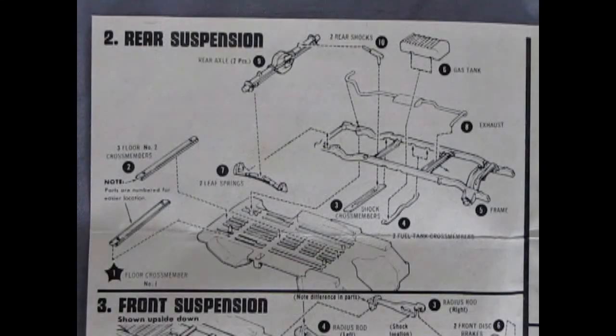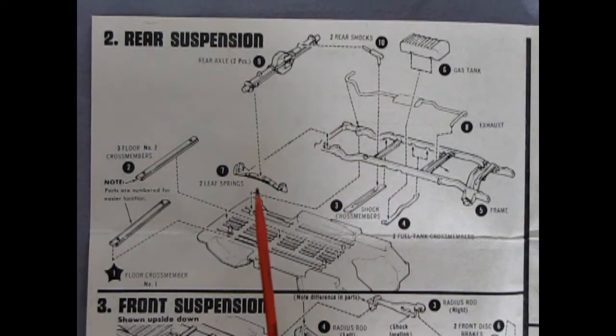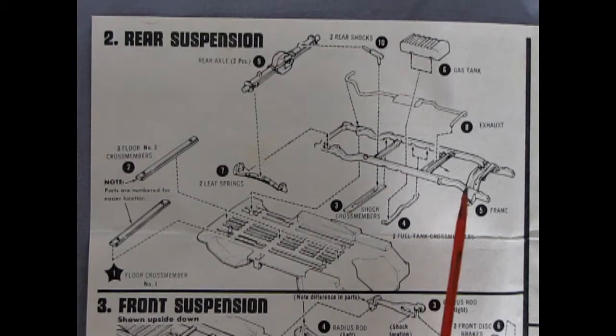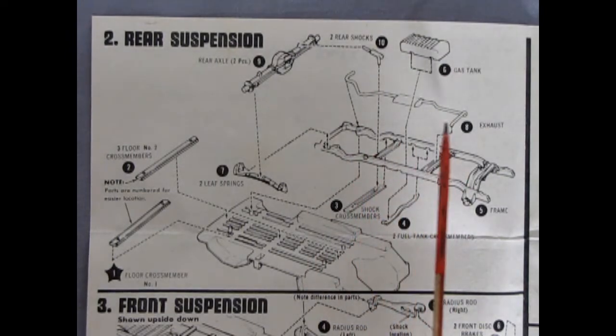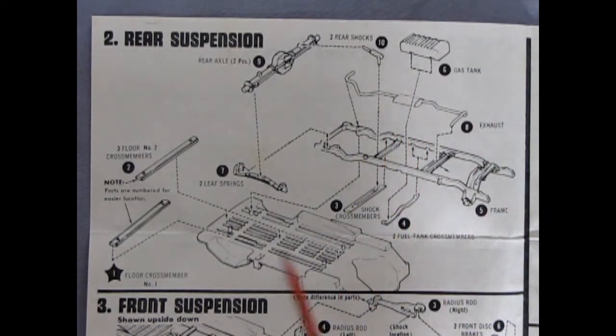Panel 2 shows our rear suspension going together and here we have our differential as well as two leaf springs. We've got a nice full frame going on here with cross members being glued into place as well as an exhaust and a fuel tank, shock absorbers and then we have floor cross members as well and this all goes down on this nice chassis pan.